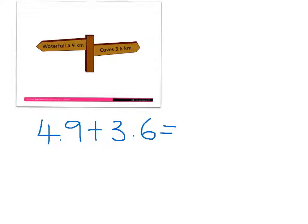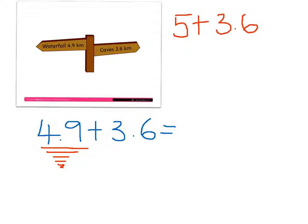Now one of the ways that you can work out problems mentally is when you see a number like 4.9 — any number that's very, very close to a whole number — you can use that number. So I'm going to try and use 4.9, and I'm going to round it up to 5, because 5 is very close. And I'm going to add 3.6. And I know that 5 plus 3.6 equals 8.6.